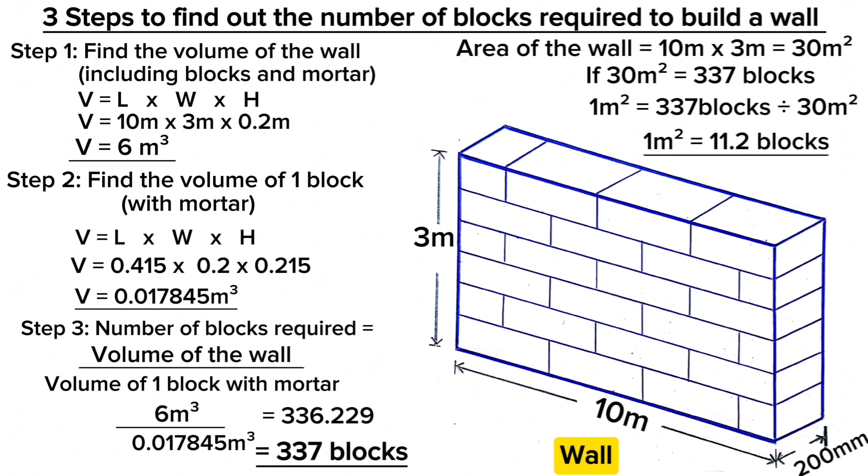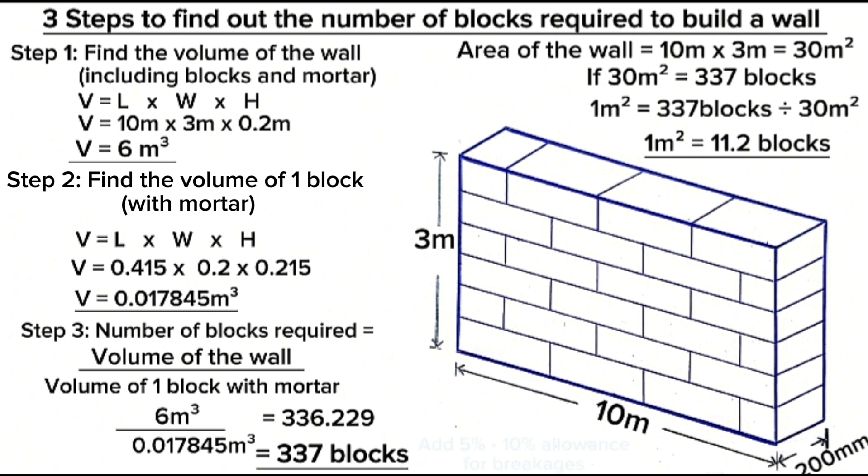the exact number of blocks required to build a wall. On top of this figure, you can add 5 to 10 percent allowance for breakages that may arise. When you want to know the exact number of blocks required to build your house, work out each wall separately just the same way we have worked on this wall, then later deduct openings such as doors and windows.